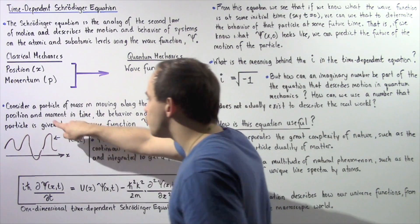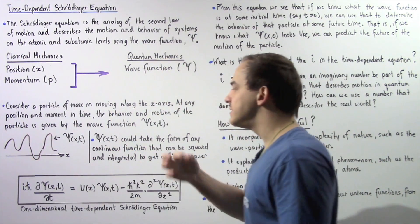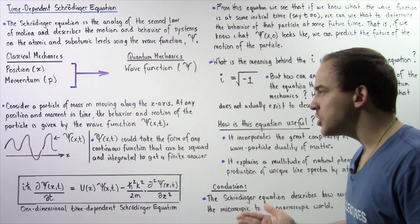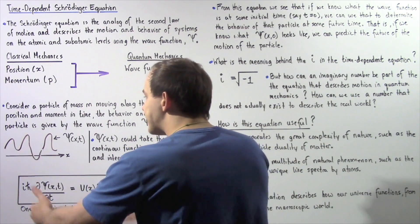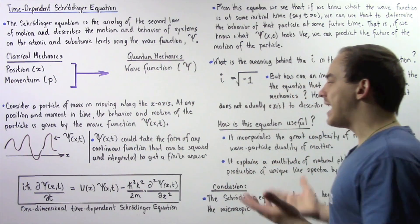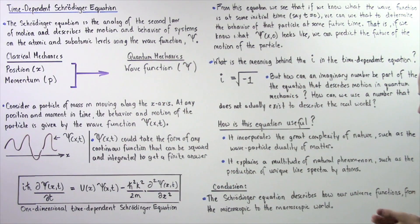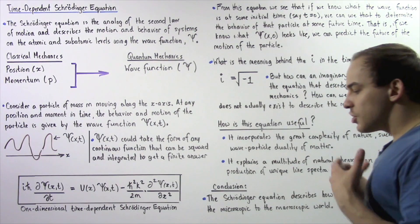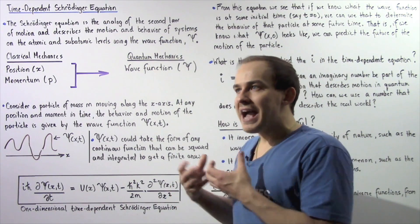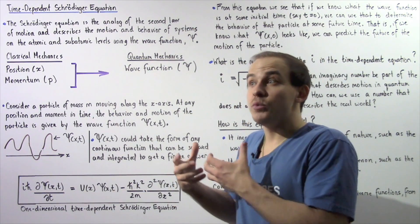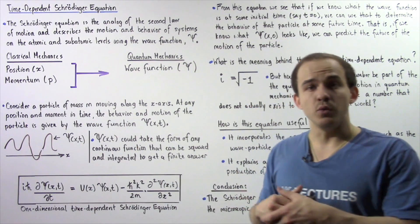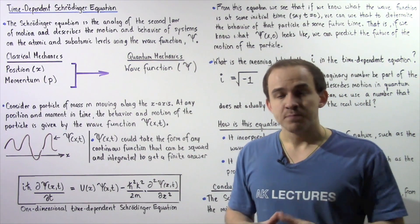So this is one example of our continuous wave function that we can integrate and square to actually get a finite result. Now the question remains: where exactly and how do we calculate and obtain the wave function?